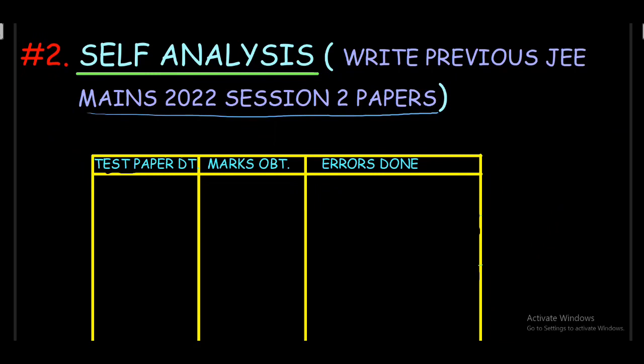So the second point is self analysis. What do you mean by self analysis? Now let me explain it to you. What you have to do is try to write at least two papers per week with proper time limit between 9am to 5pm with actual exam conditions. This will actually help in building up your exam temperament. You can take the papers from 2022 session two or session one papers.